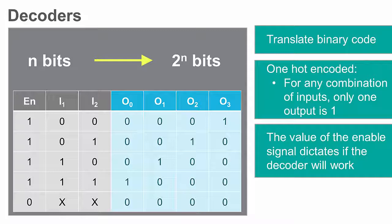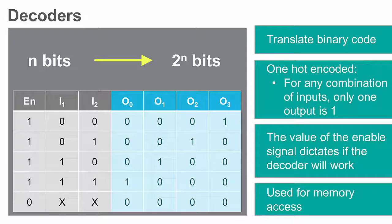One of the most important applications of decoders is memory access, where they are used for decoding the address of the rows in the memory blocks.